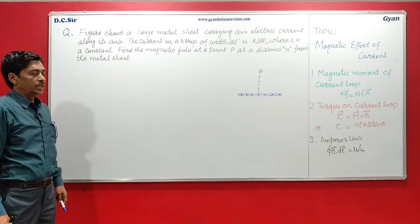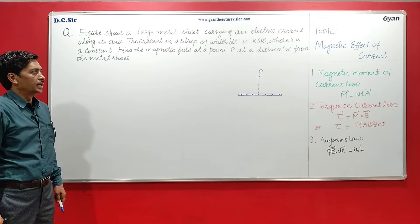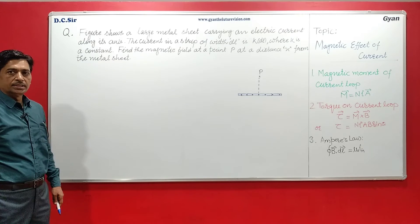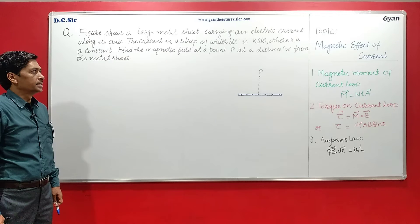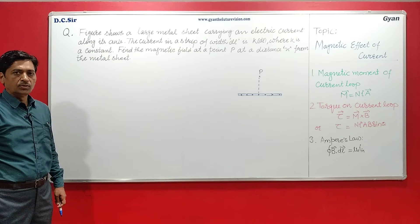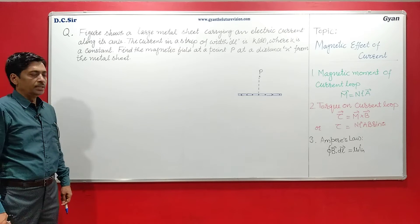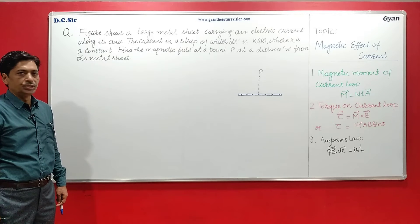The problem is the figure shows a large metal sheet carrying an electric current along its axis. The current in a strip of width DL is K·DL where K is a constant. Find the magnetic field at a point P at a distance X from the metal sheet.